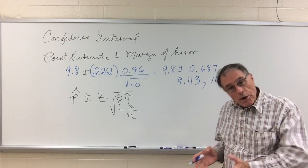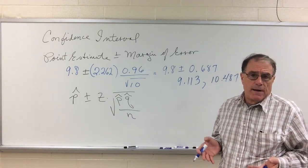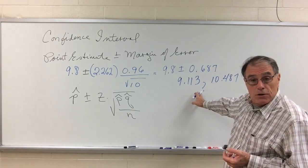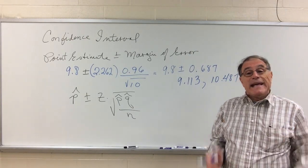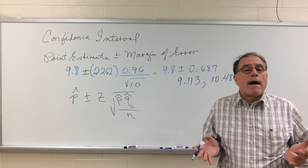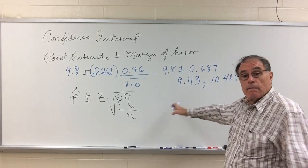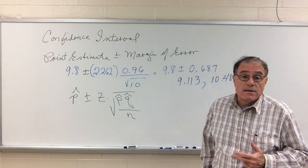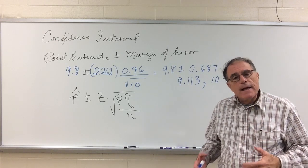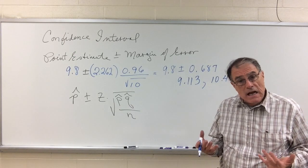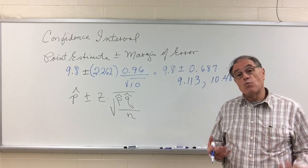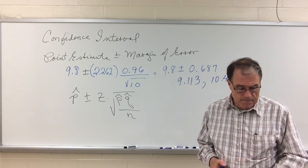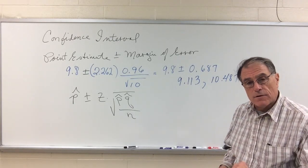95% of them would include the true population mean for average growth in the first year. Whether this particular interval includes it or not, I have no way of knowing. It either does or it doesn't. There's no probability about it. It's either here or it isn't. And I don't know, and I never will. That's what confidence intervals are. All I can say is that if I construct many intervals in this process, 95% of them will include that true population mean. That's how we can construct confidence intervals for the mean.